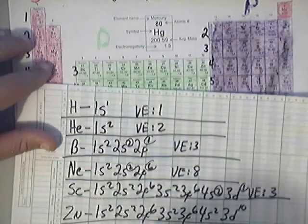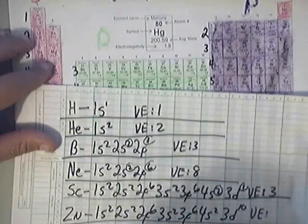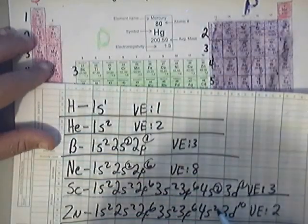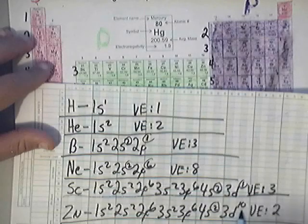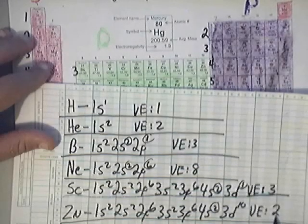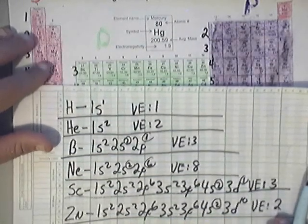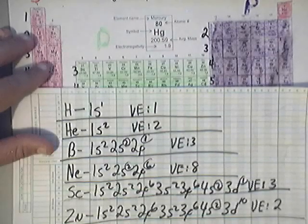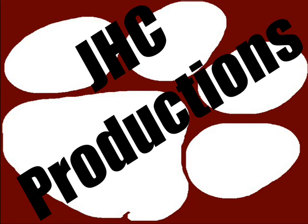As for zinc: zinc is in column twelve as a neutral atom, so it has two valence electrons. The outermost orbital is 4s², which has two electrons. Notice that the d orbital — 3d¹⁰ — is completely filled. If it's completely filled, you do not count it toward the total valence electrons. So it's two instead of twelve. If you watch the next video, I'll do more examples of electron configurations, valence electrons, and also explain paramagnetic and diamagnetic.